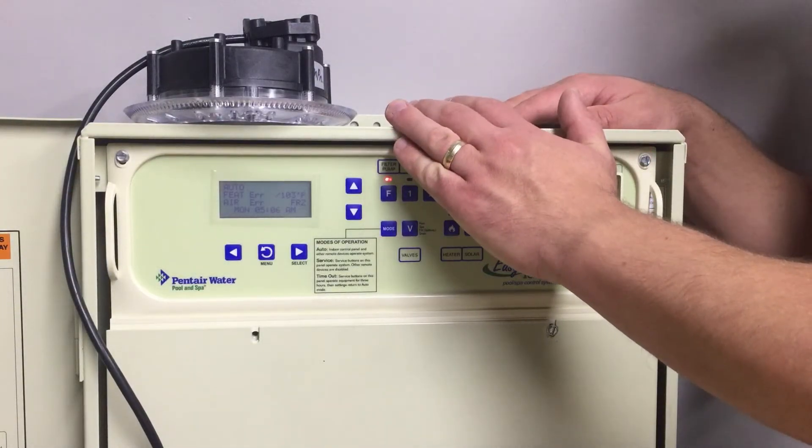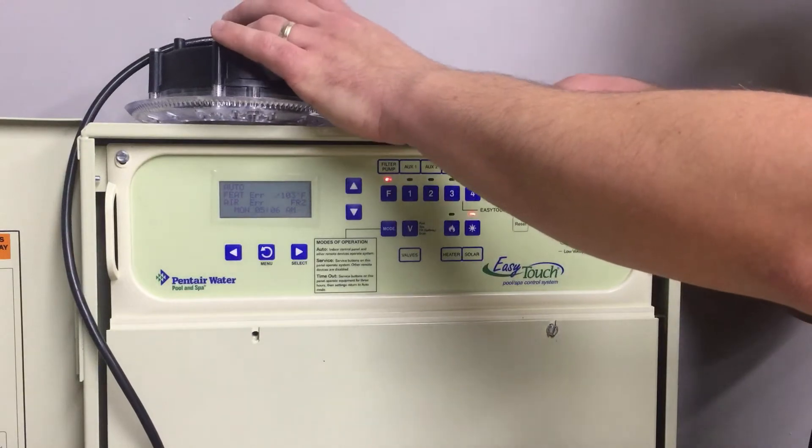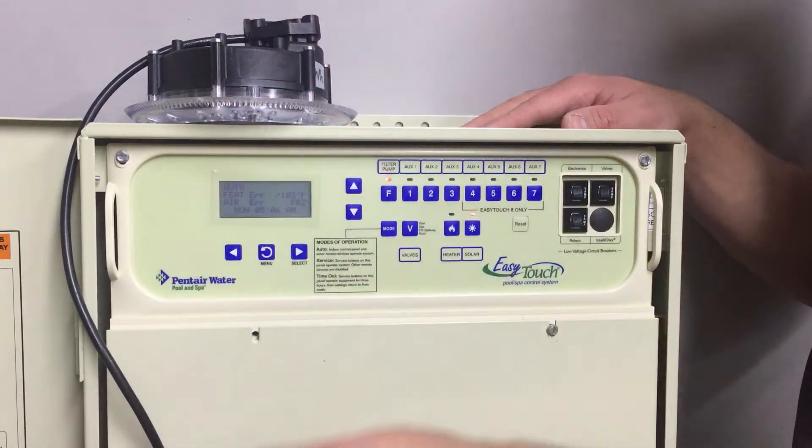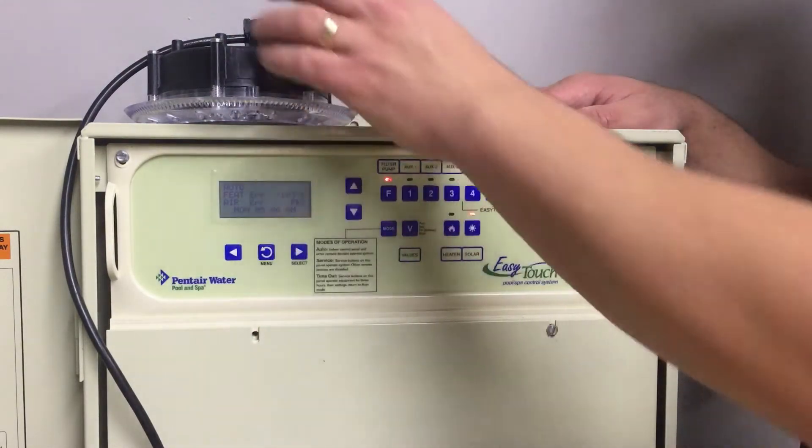Using your Pentair controller, you must set your Spireletrix MultiPlus light up into IntelliBrite mode. First, identify which auxiliary the light is plugged into.